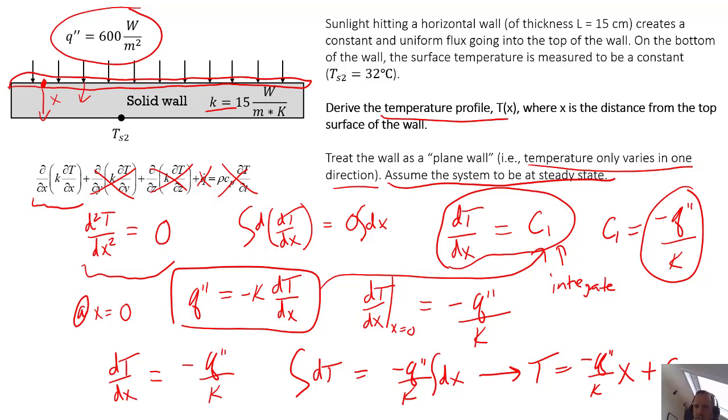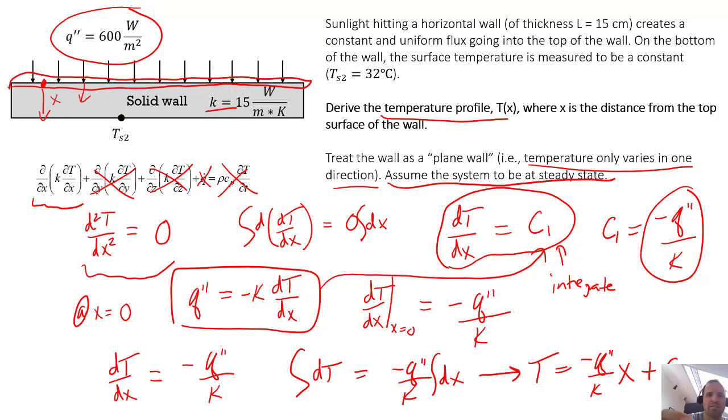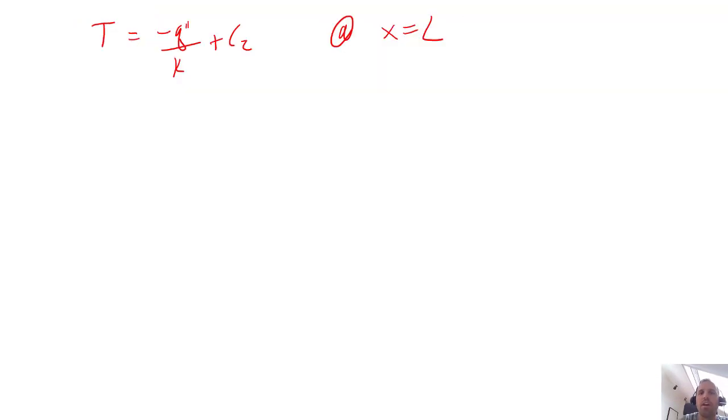So how do we get c2 at this point? This is the generic form of the equation. We still don't know what c2 is, so now we could apply our other boundary condition. We have T equals minus q double prime over k x plus c2. Our other boundary condition is at x equals L, where L is the thickness of this wall. We have our temperature is equal to T_s2.